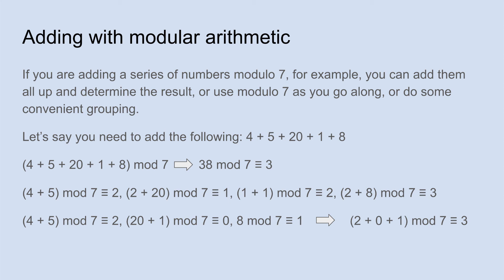And then finally I'll add 8 to that. 2 plus 8 is 10, and 10 mod 7 is 3. And that keeps the numbers as small as they possibly can be, and makes the addition a little simpler. And a few more calculations to do along the way, though.